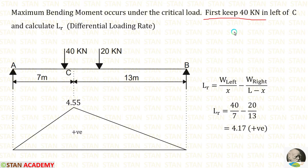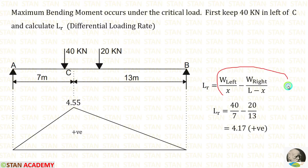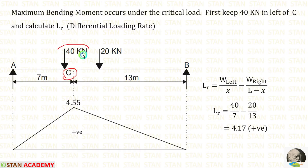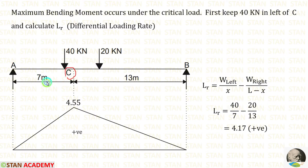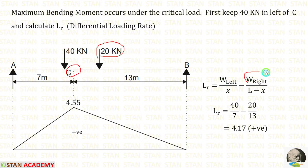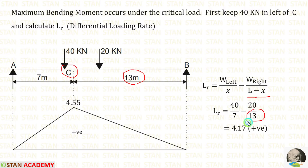First, let us keep 40 kN on the left of C. The formula for LR is: W_left/x − W_right/(L − x). On the left of C we have 40 kN, so W_left = 40. The distance on the left is 7 m, so x = 7. On the right of C we have 20 kN, so W_right = 20. On the right of C we have 13 m, so L − x = 13. Finally, we get a positive value.